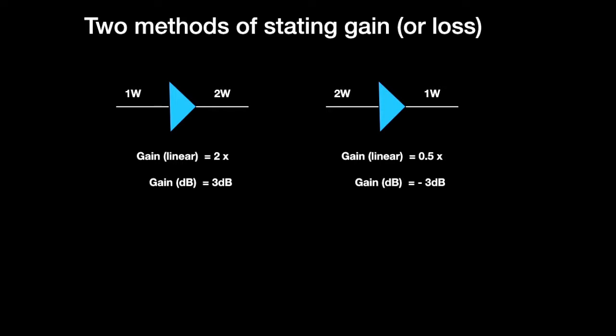It's worth noting that any gain of less than linear 1, in other words, a loss, any gain of less than linear 1, will give an equivalent gain in dB that is negative. So negative figures in dBs represent a less than 1 gain, or you could call it a loss. A linear gain of less than 1 is a loss. A negative dB gain, is a loss.